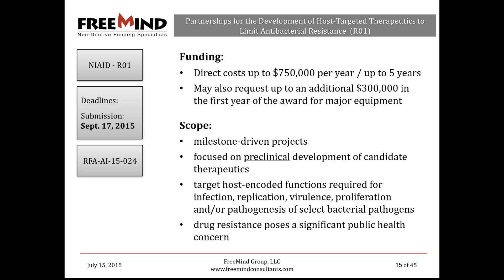The budget includes direct costs of up to $750,000 per year for a maximum period of up to five years. Applicants can also request an additional $300,000 in the first year for major equipment — very uncommon with grants. When you add it all up, you're potentially looking at more than $4 million in direct costs, plus indirect costs on top of that. The deadline is September 17th, so get started as soon as possible.